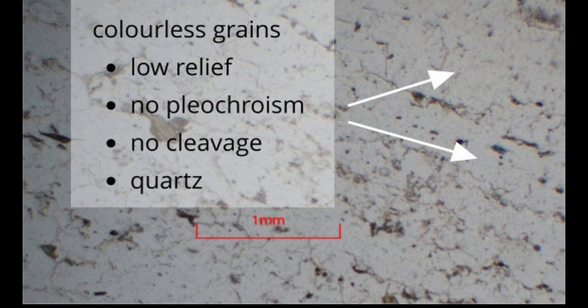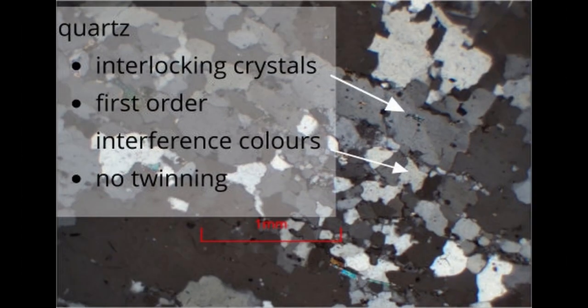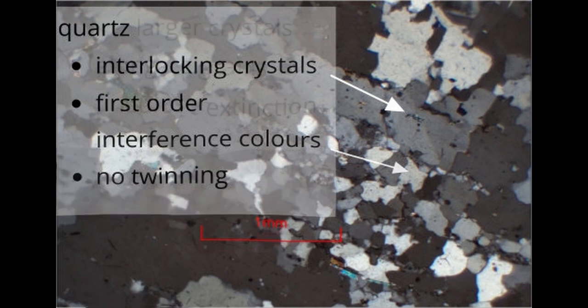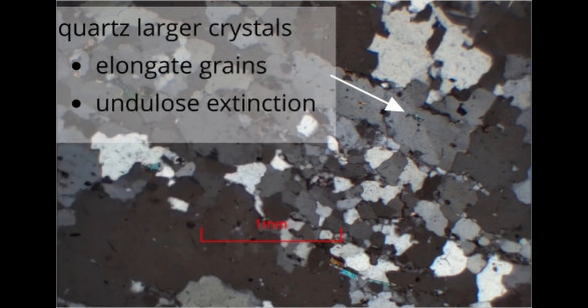Grains are between 0.25 and 2mm in size. Grain boundaries are best seen under higher magnification. Under cross polars, the interlocking crystals of quartz show first order grey and white interference colours. There is no twinning.